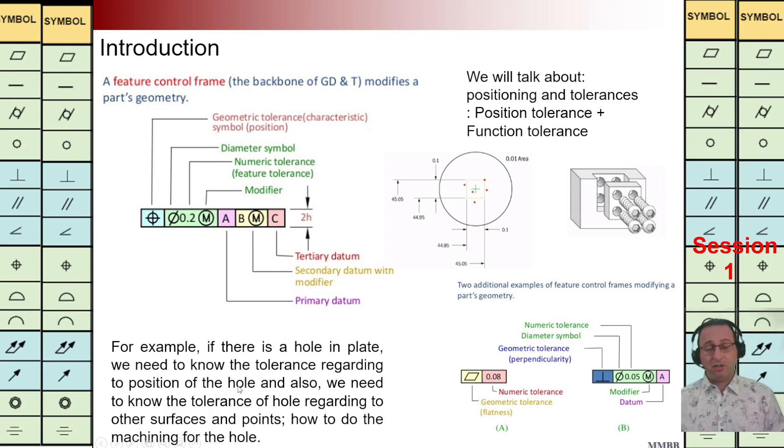The basic definition of GD&T is related to feature control frame. Feature control frame is the backbone of GD&T. As we can see in this figure we have a box divided into several boxes. In the first box we have used geometric tolerance symbol. We have 14 different symbols. We are going to talk about all of them in detail in future sessions.